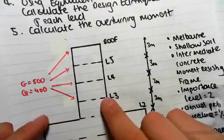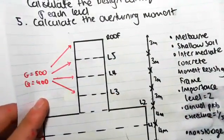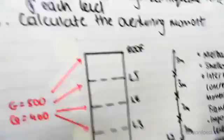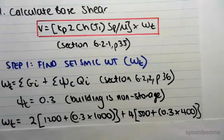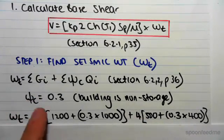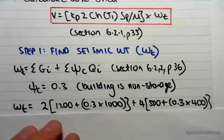Then we have four floors here of G equals 500, Q equals 400. So we go 500 plus 0.3 times 400, and we have four lots of those. This is now the sum of the dead and live loads on each floor.